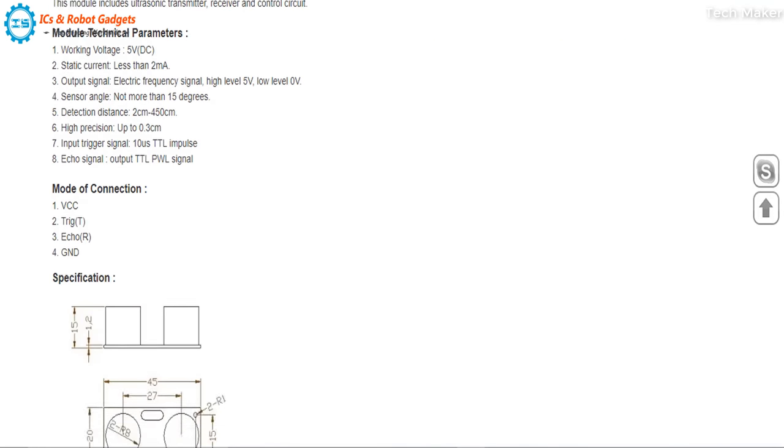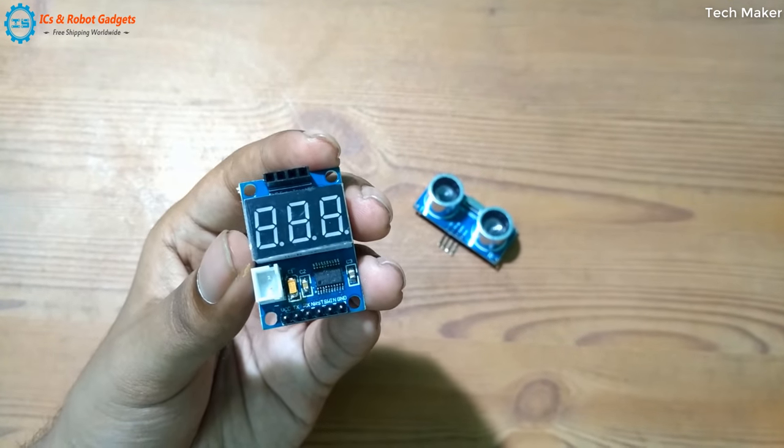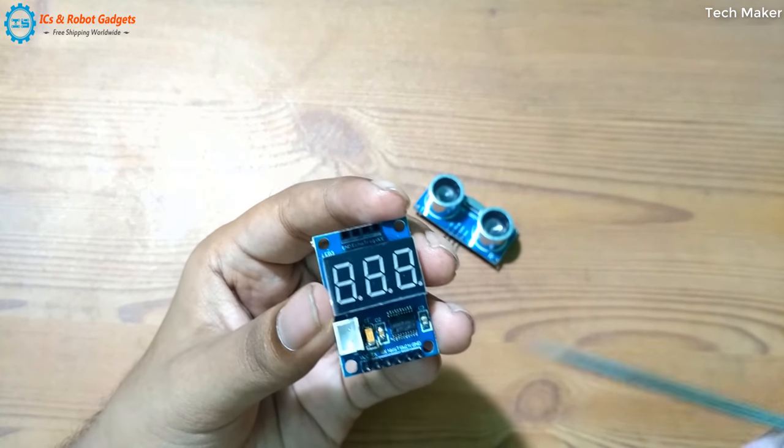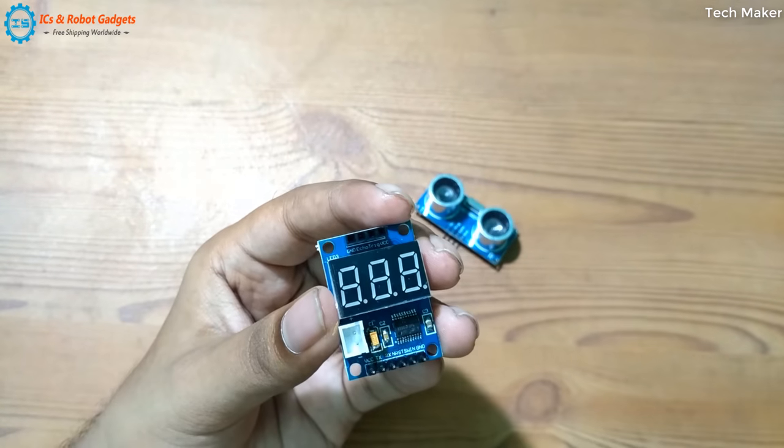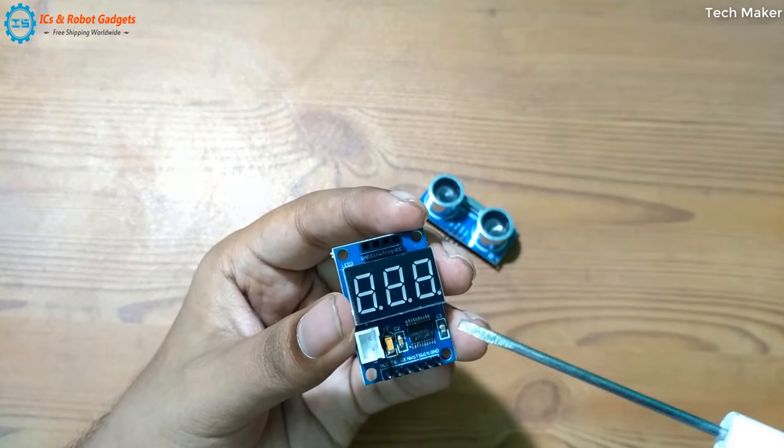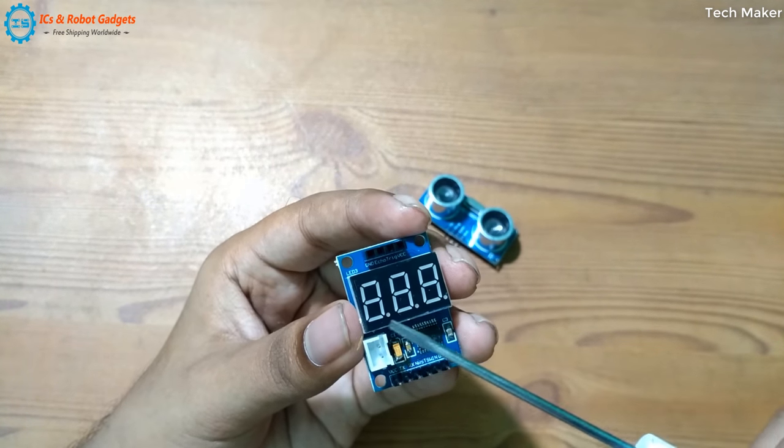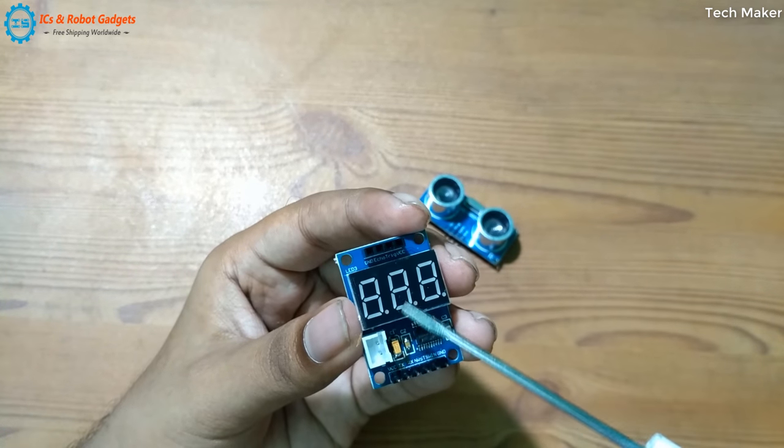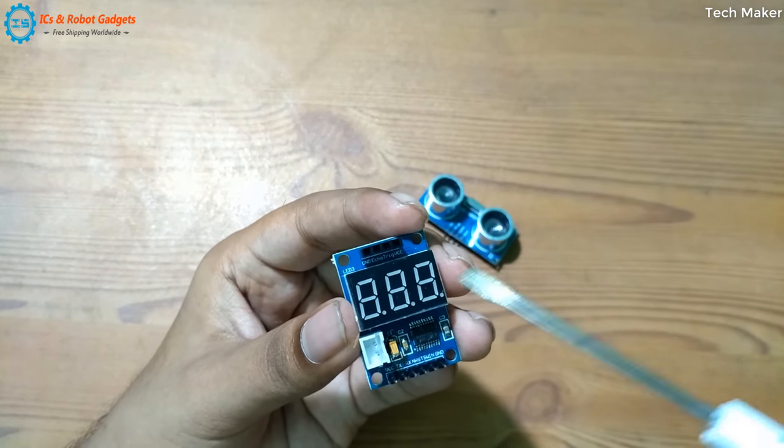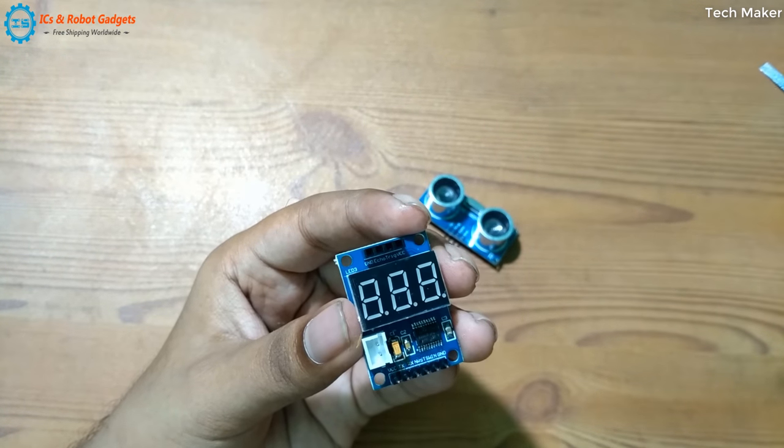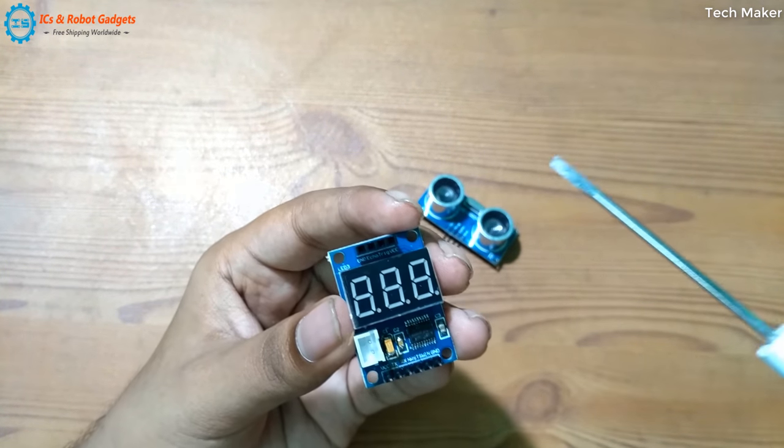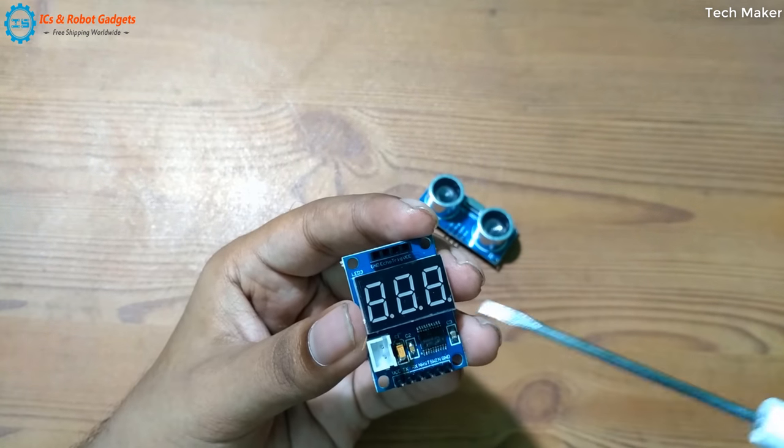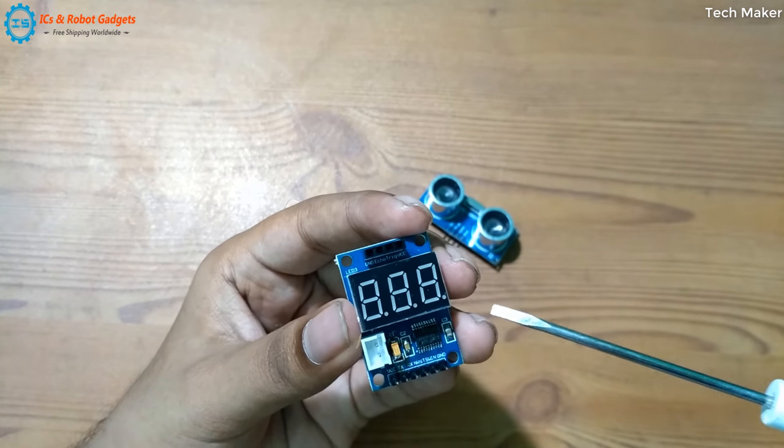This board comes with an onboard high-performance microprocessor. You can see the digital tube display, which is actually a seven-segment display. It can show maximum range up to 300 to 400 centimeters. The units are in centimeters.